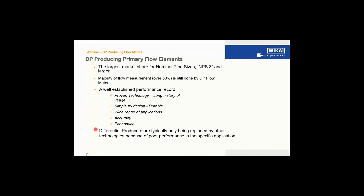In general, DP-producing elements represent the largest flow measurement technology out there. Most measurements are still being done by DP-producing elements today. They are proven technology with a long history. They are simple to use, very durable, have a wide application range and a wide accuracy range. Calibrated DP meters can measure very accurately, down to half percent or better. They are very economical, and new technologies only replace differential measurement technologies when application requirements have changed or a higher performance standard is required.